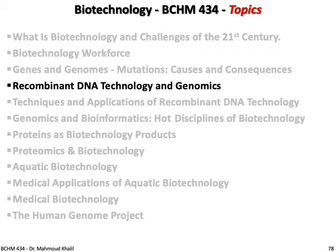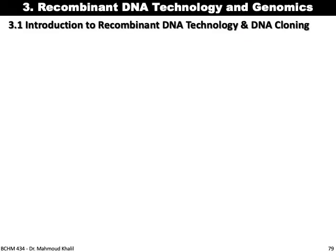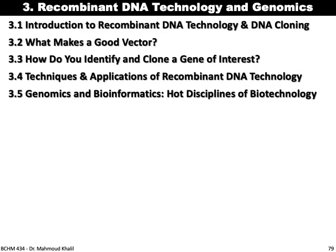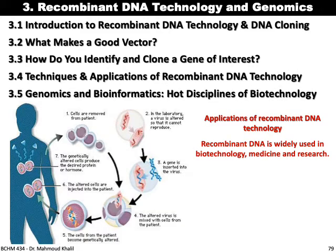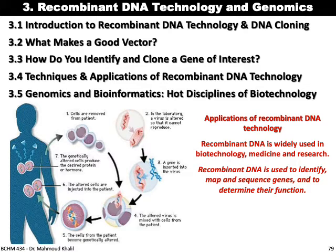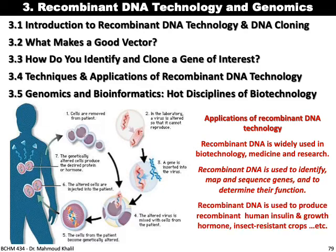Hello. We'll continue our lecture about biotechnology with the fourth topic: recombinant DNA technology and genomics. We'll deal with five topics. Generally, the applications of recombinant technology are widely used in biotechnology, medicine, and research. It's used to identify, map, and sequence genes and to determine their function. Recombinant DNA is used to produce recombinant human insulin, growth hormone, and insulin-resistant crops.